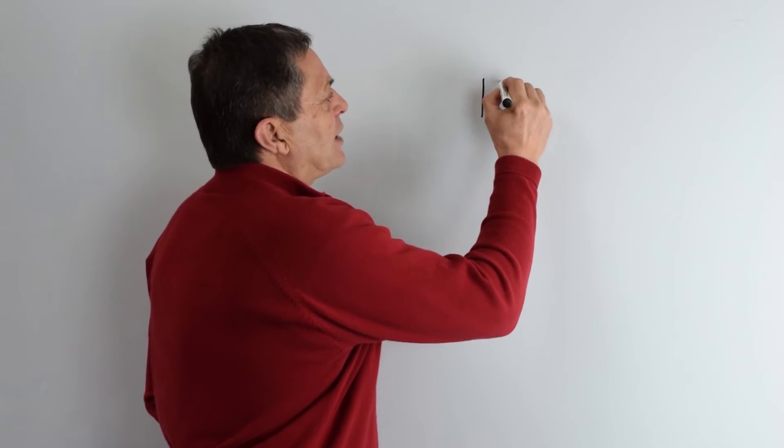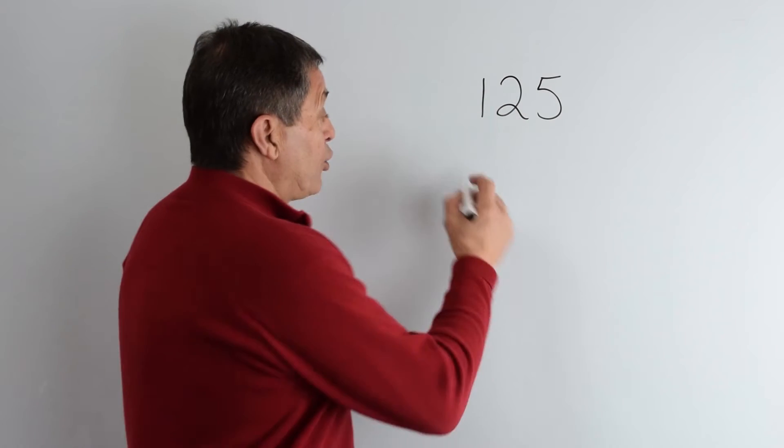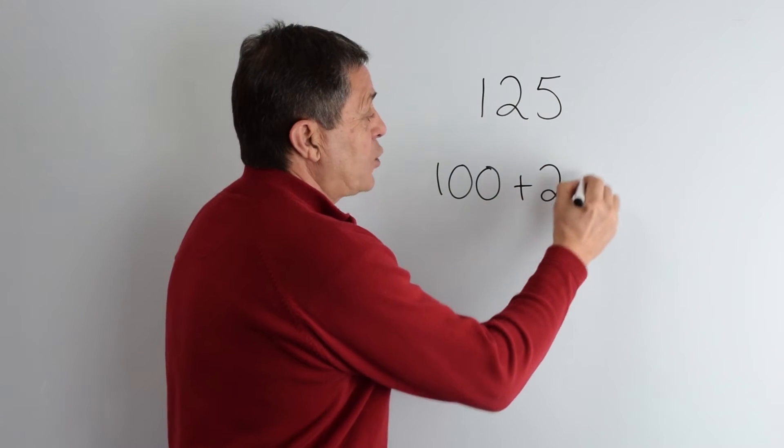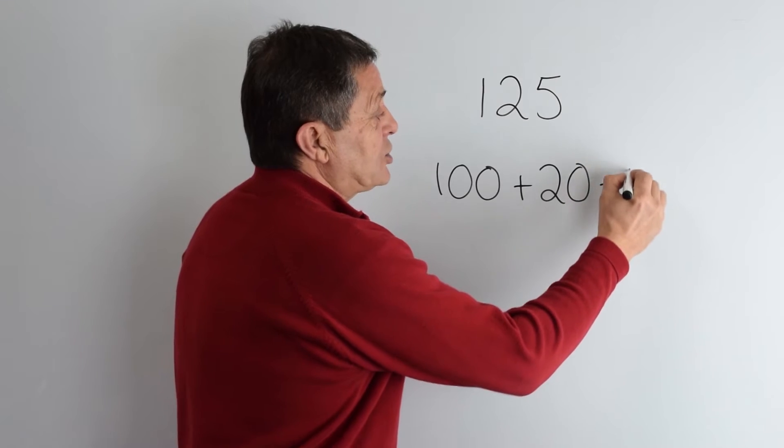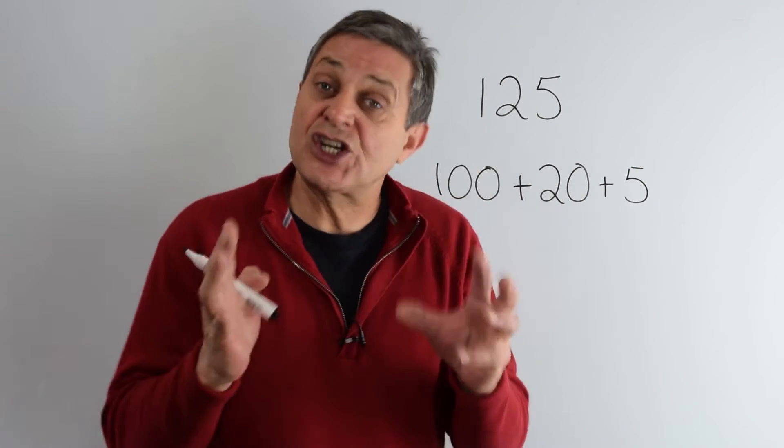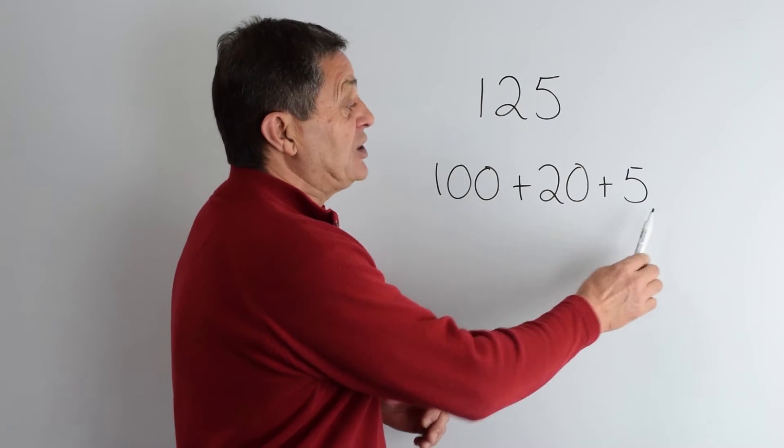Chunking is simply breaking a number into more manageable parts. Take the number 125 for example, you can break that up into a chunk of 100, plus a chunk of 20, plus a chunk of 5. This is also called partitioning a number, where you've got the hundreds, the tens, and the units.